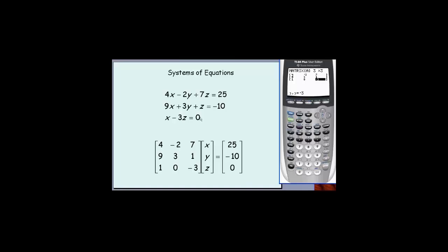We're just going to put the two numerical matrices in there. We're going to go back to matrix, but this time we're going to edit matrix B. Matrix B is a three by one matrix, so I had to adjust that. And that has the values 25, negative 10, and zero.